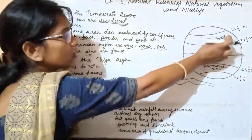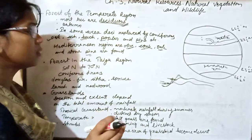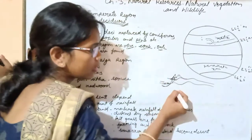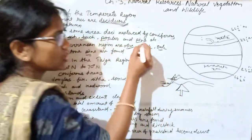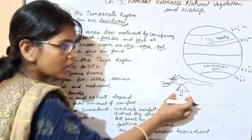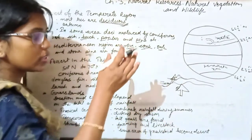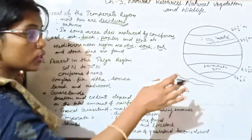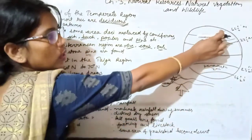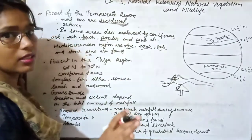So in the higher altitude of the temperate region we have coniferous forest. The features of coniferous forest: because it lies at higher altitude, the trees are cone-shaped — that is why the forest is called coniferous. The trees are straight and their leaves are needle-shaped, so that snow slips easily from the tree. That is why coniferous forests are found at upper altitudes in the temperate region.